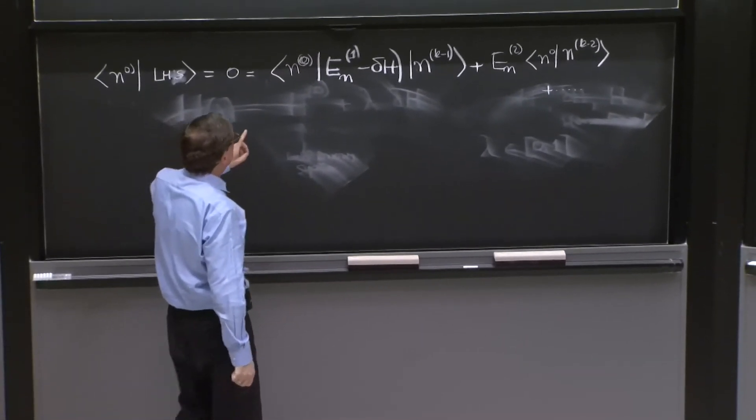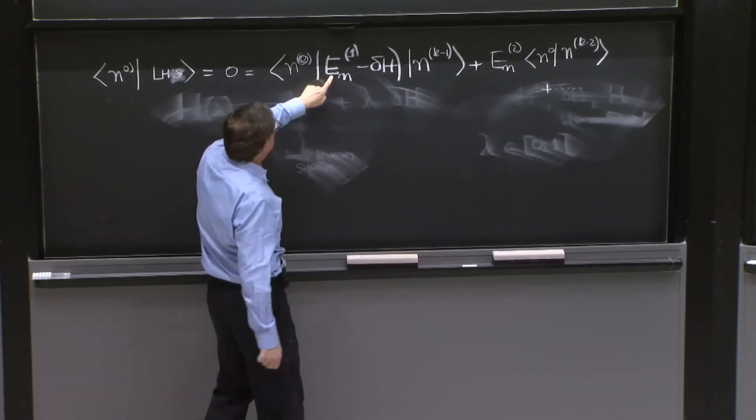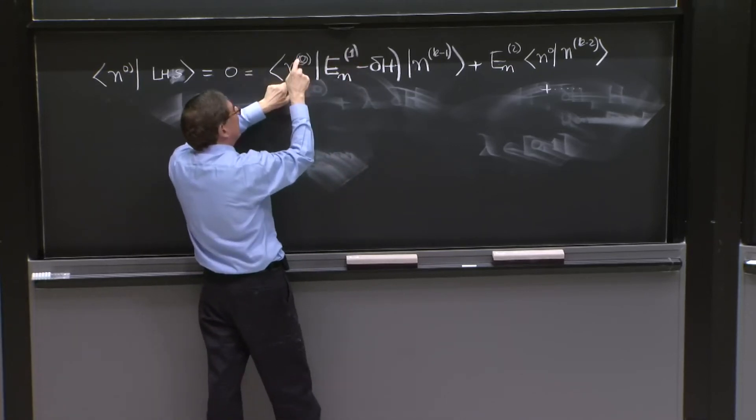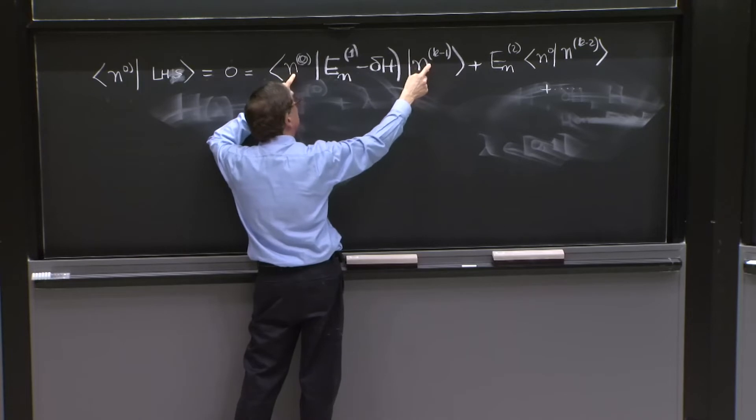Well, from here, this is a number. So I have here, this goes out, the overlap of n0 with nk minus 1.